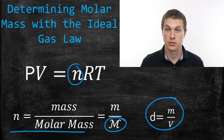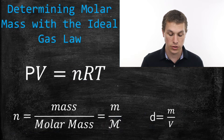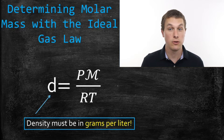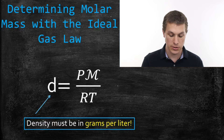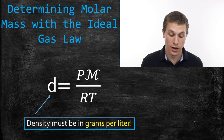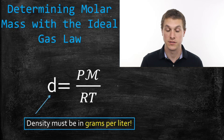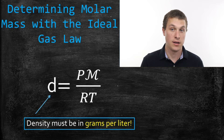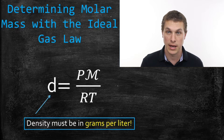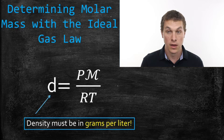If you combine those three equations using some algebra, you can rearrange them to get this equation: the density of a gas equals its pressure times its molar mass divided by the gas constant times temperature. I'll leave it as homework for those interested in algebra to derive this. This equation has a lot of applications, and in this video we're going to go through two common problem types using this density form of the ideal gas law.